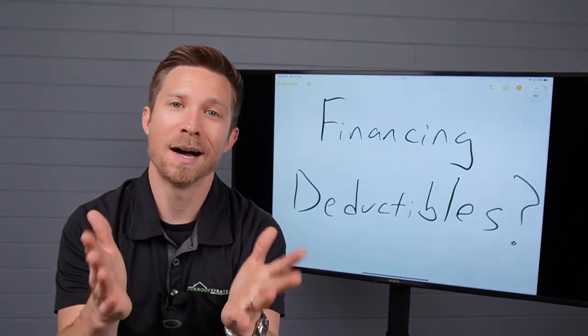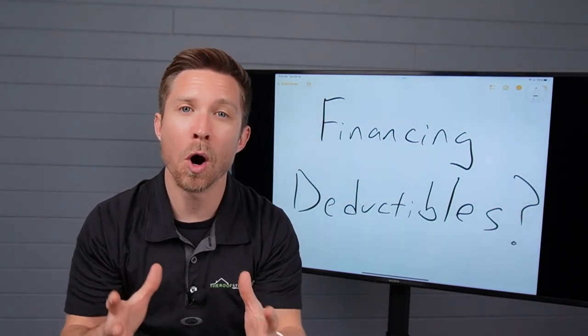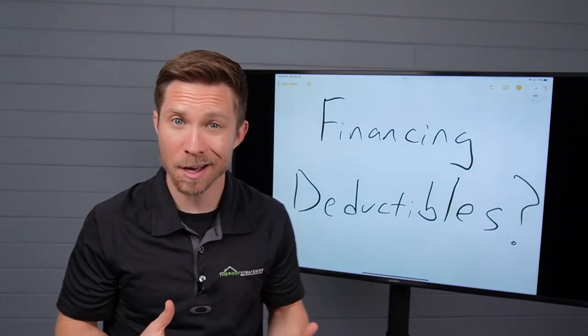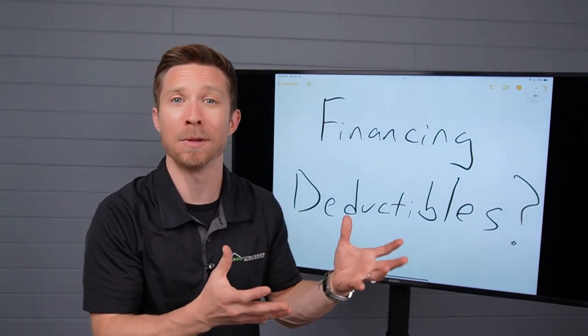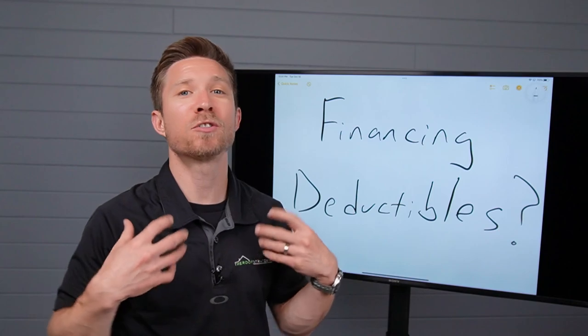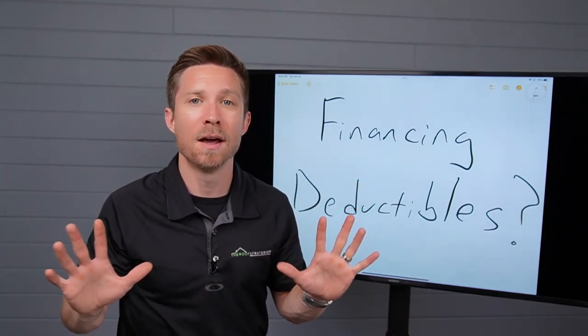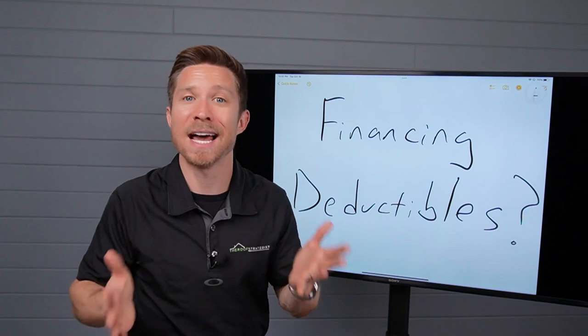The deductible comes up again and you try so hard to communicate to the homeowner that it's their contractual obligation between them and the carrier. You explain that by law they need to pay it and then you hear it, but we can't afford it. Can you help?